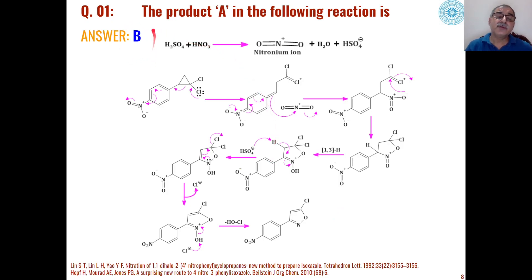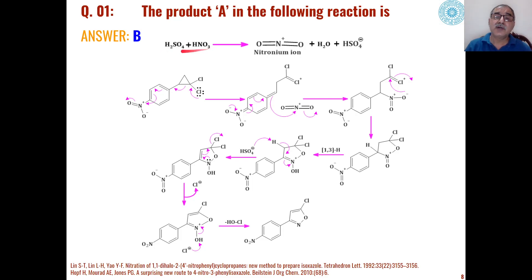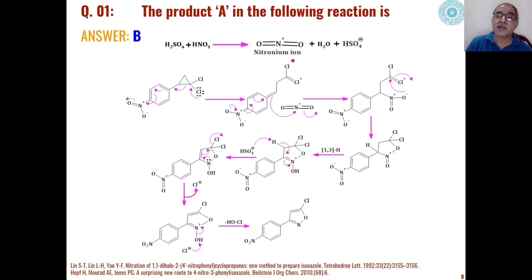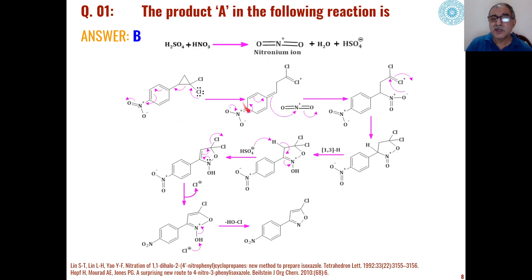In question one, the answer is B. For the cyclopropane ring having an arene functional group in addition to the dichloro substituents, sulfuric acid in presence of nitric acid generates the electrophilic intermediate — the nitronium ion — which can then undergo an electrophilic reaction with the substrate. Because of the lone pair of electrons on the halogen, this can be shared with the carbon-halogen bond to acquire a positive charge on that carbon.